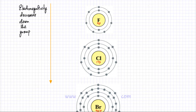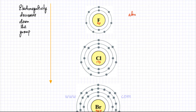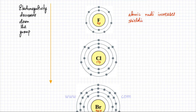Now I'm going to discuss the electronegativity down a group. Electronegativity — the tendency for an atom to gain electrons — decreases down the group. I've picked group 7 with three elements: fluorine at the top, then chlorine, then bromine. As you move down the group, the size of the atom increases — the atomic radius increases — and there is more shielding, so shielding increases as well.